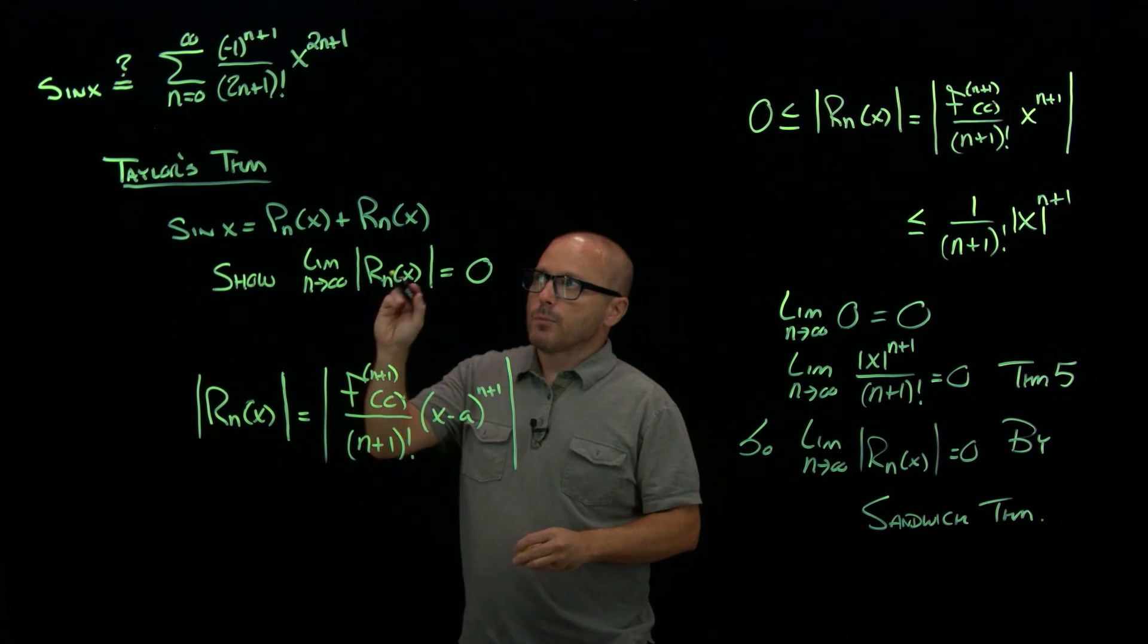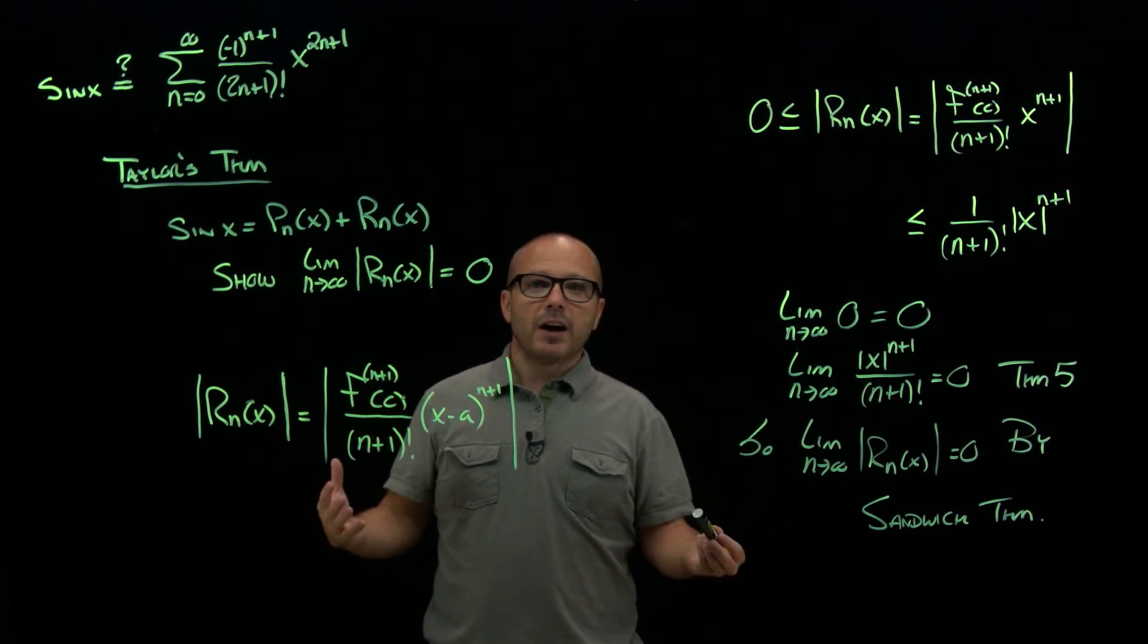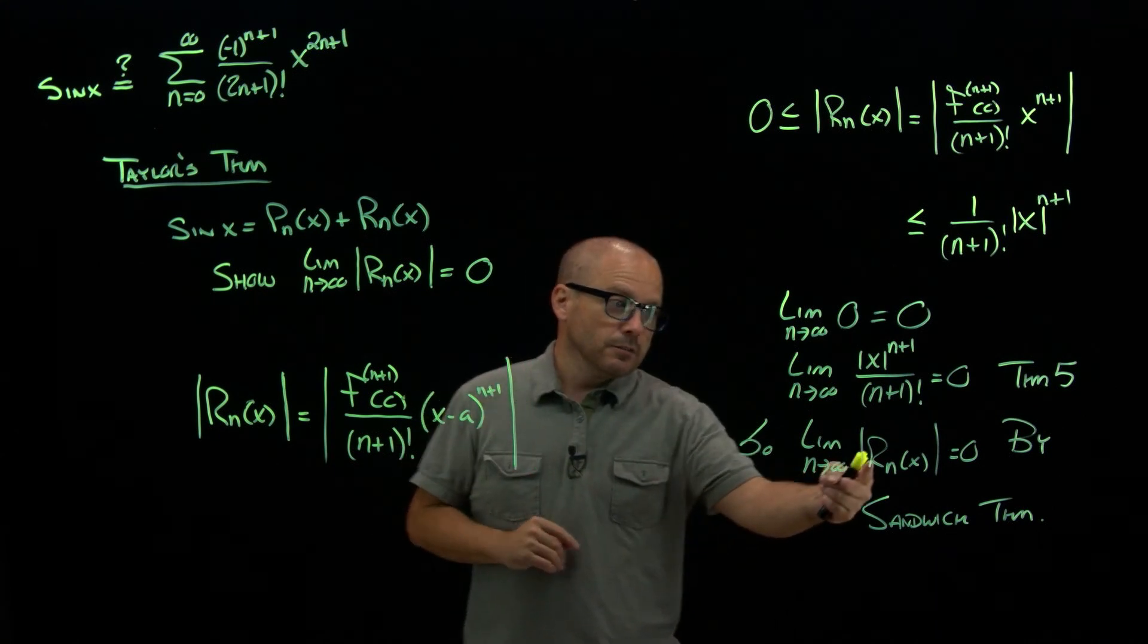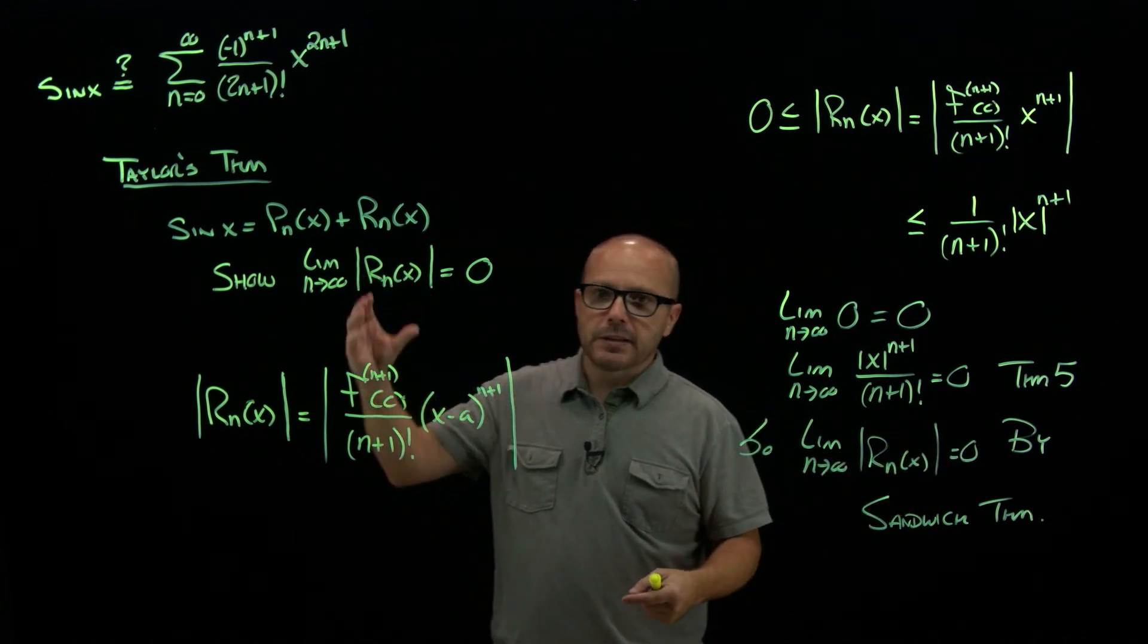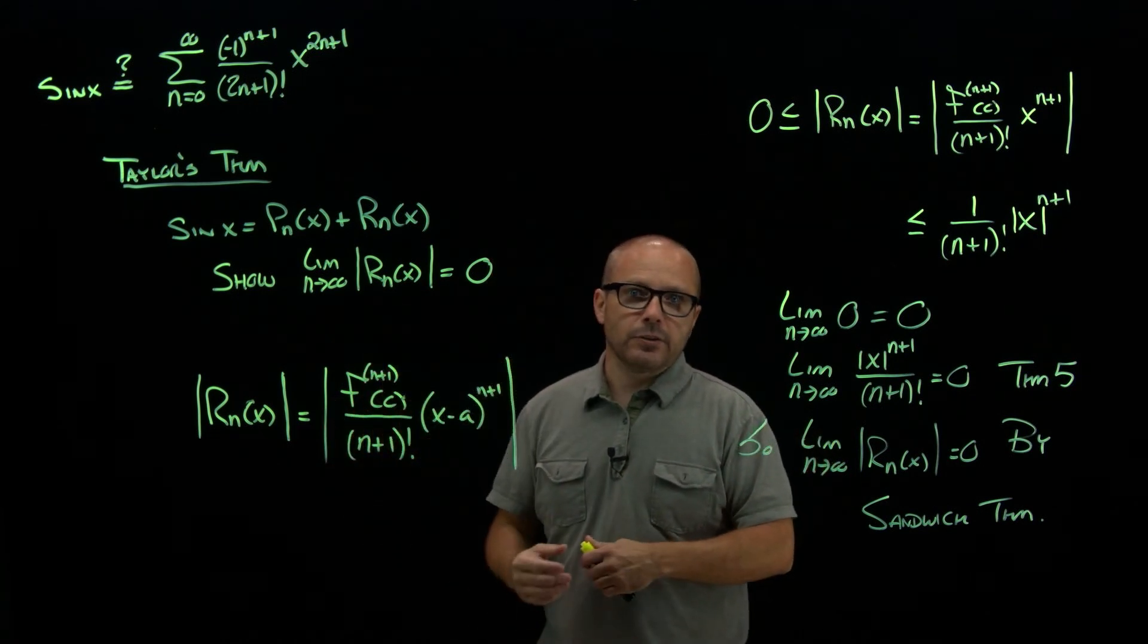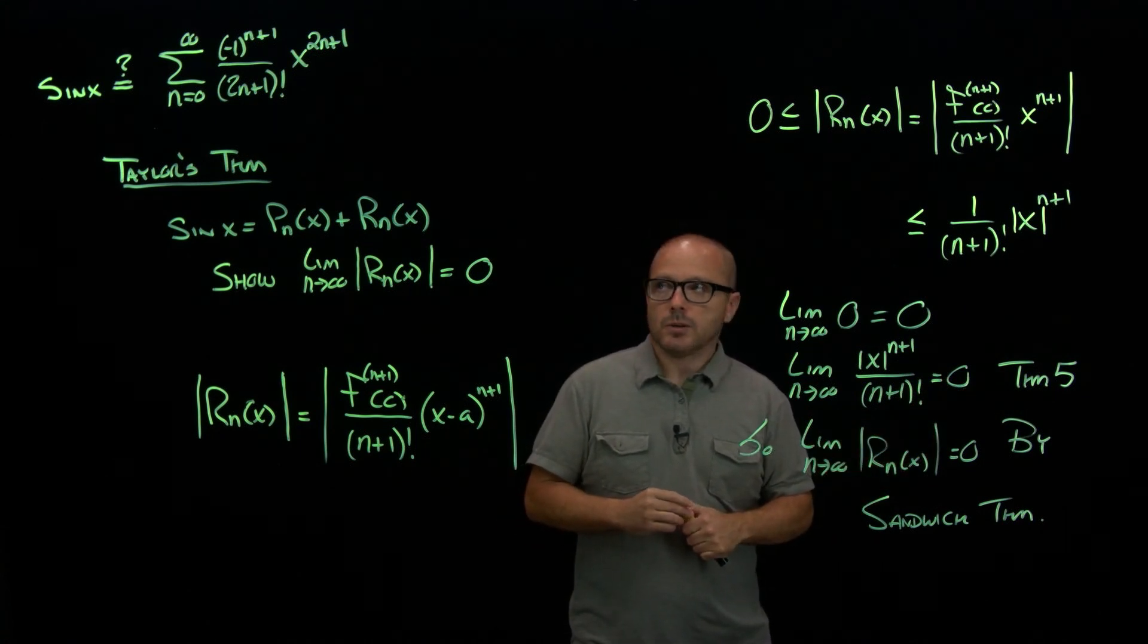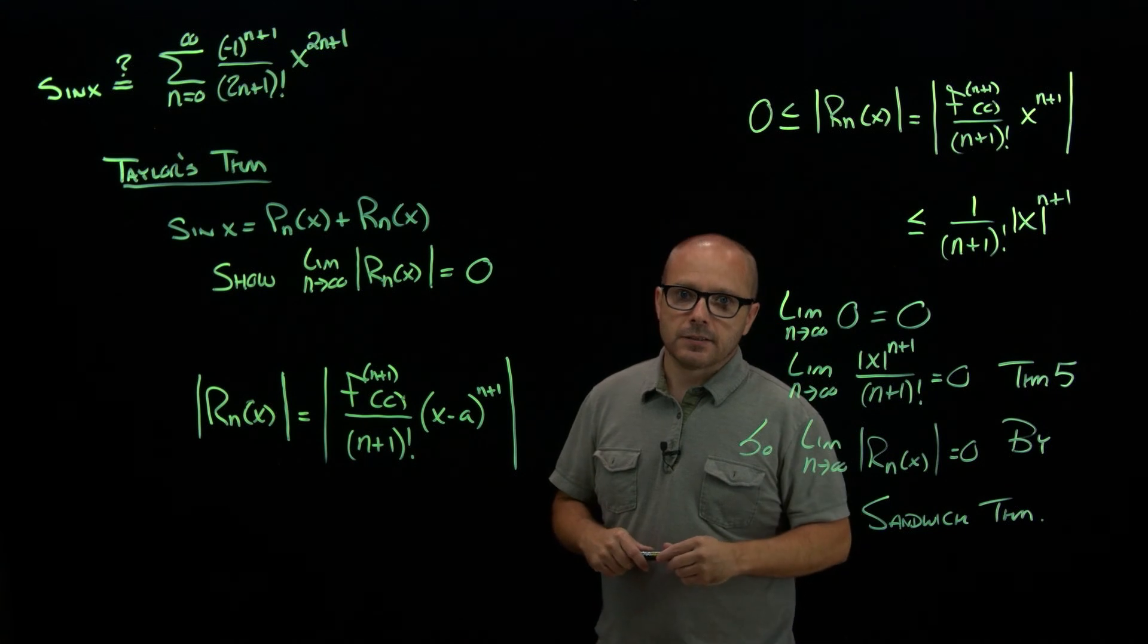So if you want to approximate sine with one of its polynomials, you can find a polynomial that gives you an error as small as you like. Because the error gets closer and closer to 0. So if you need to approximate sine of 6.38 and you want an error of 10 to the negative 50th, there is a polynomial that'll do that for you. It may require a lot of terms, but you can do it. Because you know now that the error is headed to 0.